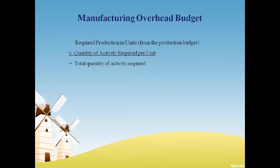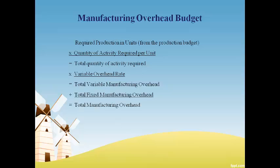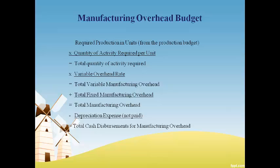The manufacturing overhead budget covers both variable and fixed manufacturing overhead. Total variable cost will change, so the number of units to be produced multiplied by the quantity required for each unit gives the total quantity of the manufacturing overhead activity required. That quantity multiplied by the variable manufacturing overhead rate gives the estimated cost. Fixed manufacturing overhead will not change with changes in the number of units produced, and the total amount for the month is added to get the expected total manufacturing cost. Depreciation expense is not paid in cash, so it is subtracted to get the total cash expected to be paid for manufacturing overhead. The word disbursement means cash paid.